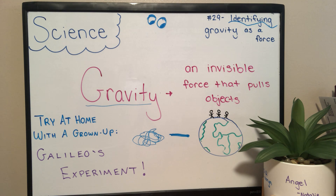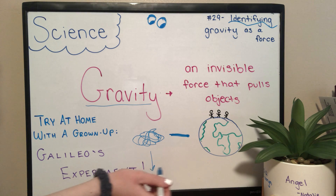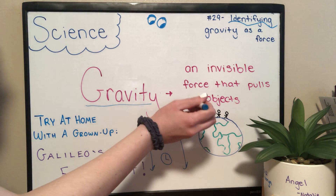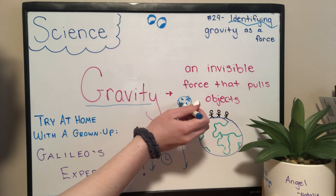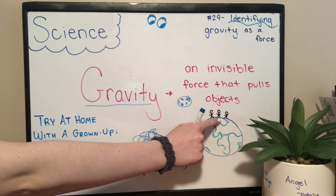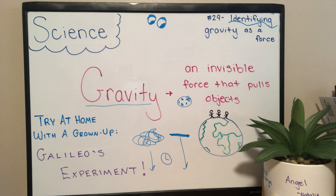The moon has less gravity than Earth. On the moon, we could jump higher than we could on Earth. If we were in space, away from Earth and the moon, the pull of gravity would be much less, and we could float.